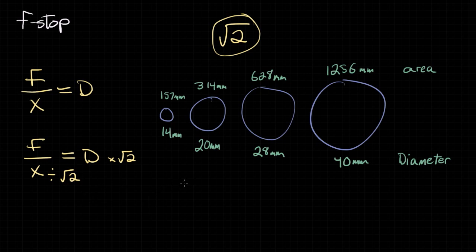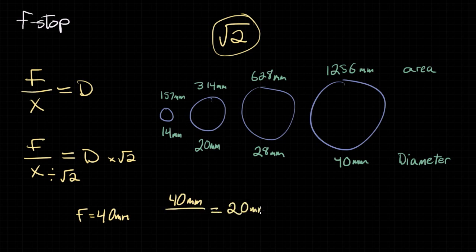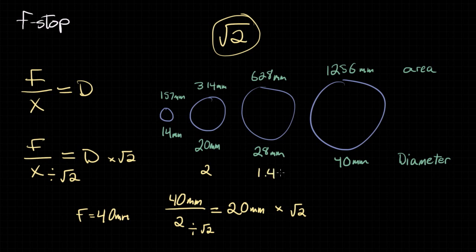So if we're multiplying or dividing the diameter every time we go up or down the f-stop scale, in order to keep the equation balanced, we need to do the opposite to x. For example, if we're going to double the amount of light, we multiply the diameter by the square root of 2, so we need to divide the f-stop number by the square root of 2. Let's plug in a real example: with a 40 millimeter focal length and a 20 millimeter aperture, the f-stop number is 2. Going to the next aperture size to double the light, we divide 2 by the square root of 2, giving us a new f-stop number of 1.4. Every time we go up a number in the f-stop scale, we divide by the square root of 2. Every time we go down, we multiply by the square root of 2.